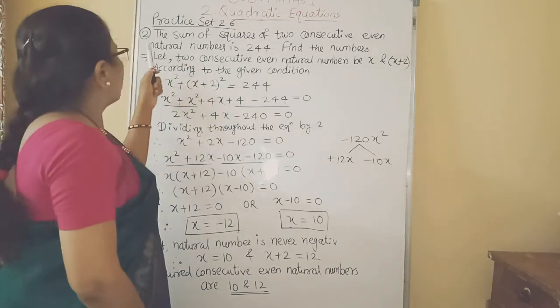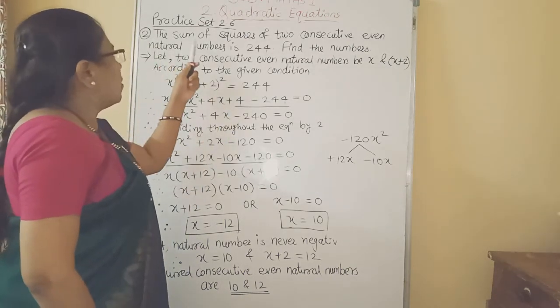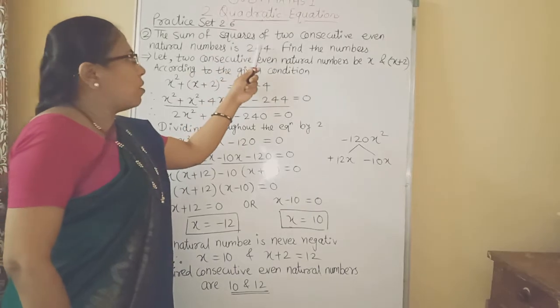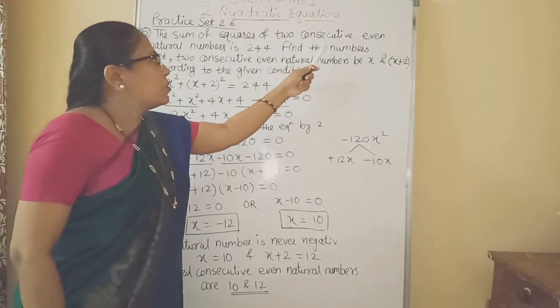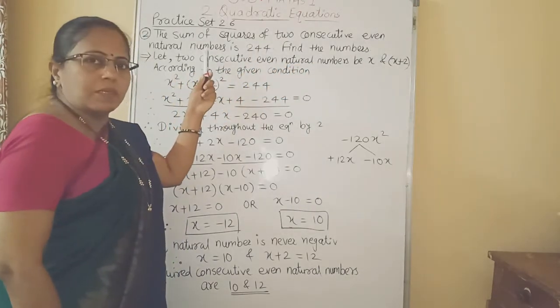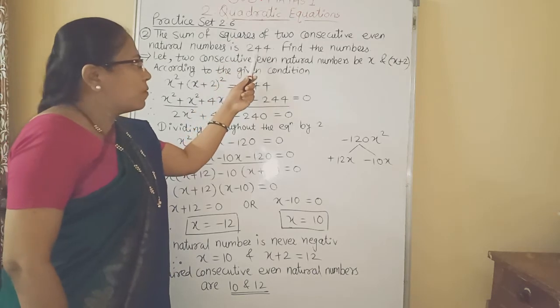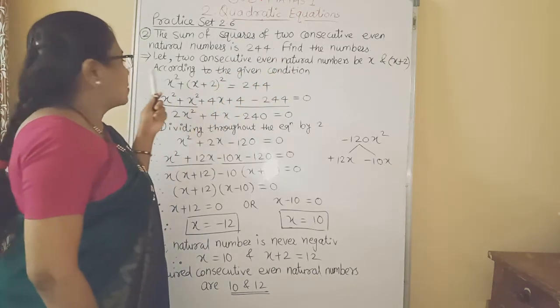Okay, now we will see second example. The sum of squares of two consecutive even natural numbers is 254. Find the numbers.